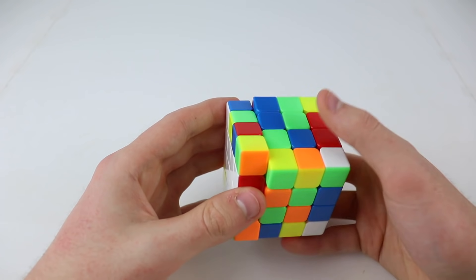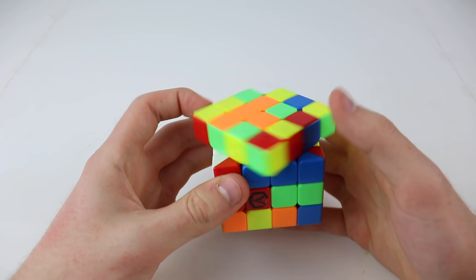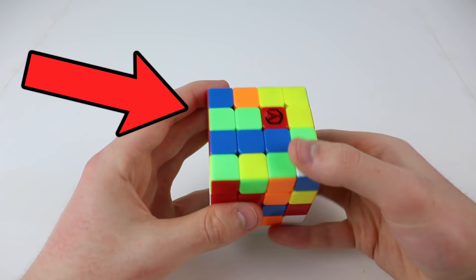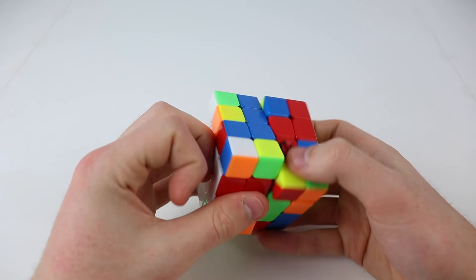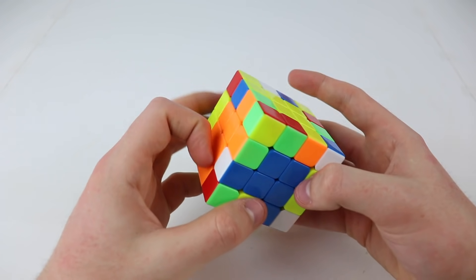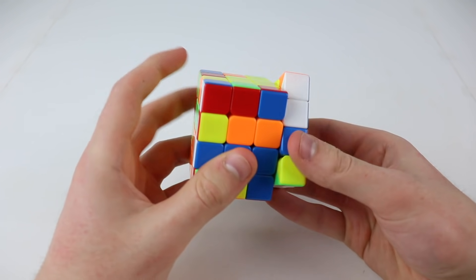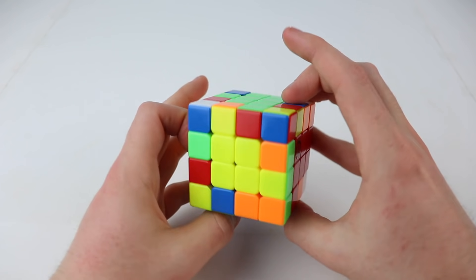you need to build your last four centers, being careful to only use the one empty slot where you don't have a cross edge, so that you don't mess up anything you've built. Once that's done, you can flip the cube back over, build the last cross edge, and put it where it belongs in the bottom layer.